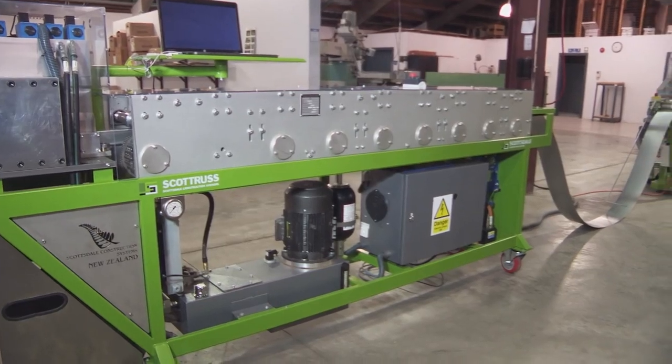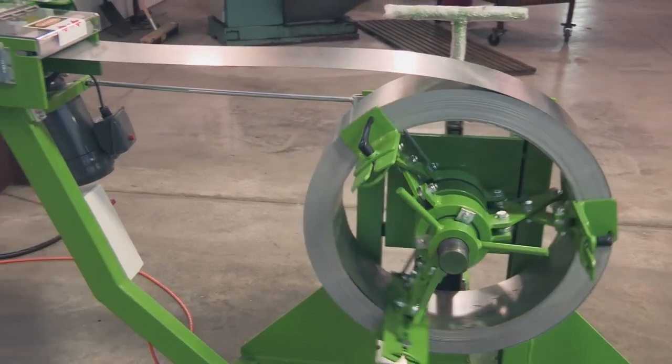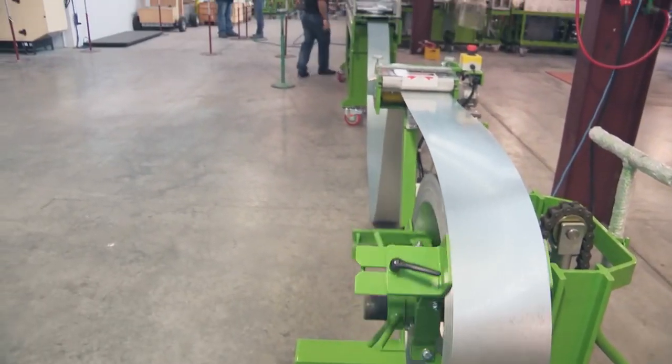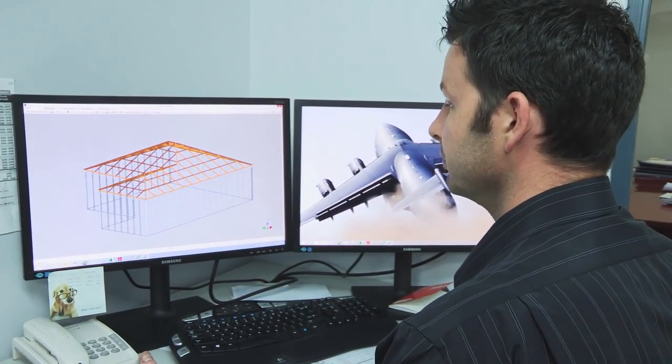Scottsdale Construction Systems provides its customers with a fabrication system that includes a roll former, an automated decoiler that feeds the steel into the machine, and our in-house proprietary design and engineering software.